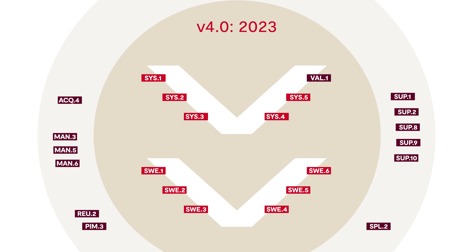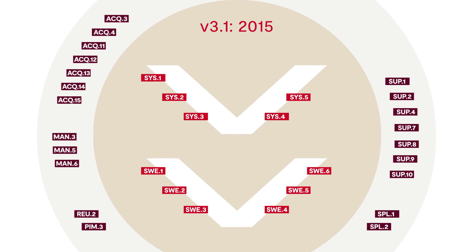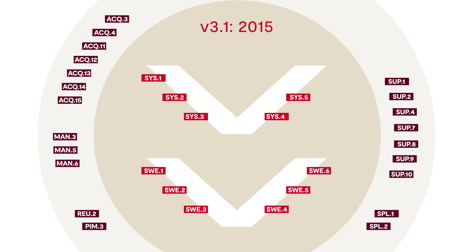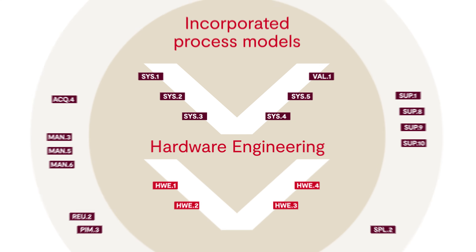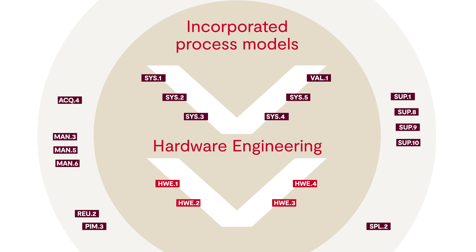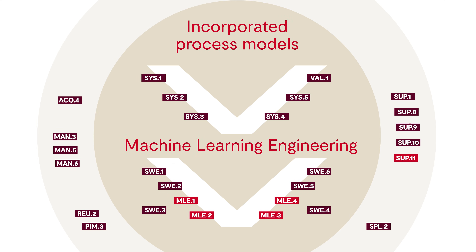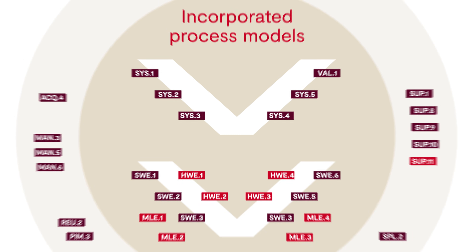The new version 4.0 brings three significant changes to the previous version ASPICE 3.1. First, additional process models are integrated in ASPICE 4.0. With these models, ASPICE 4.0 takes a first step towards mapping the entire mechatronic development process into the future.